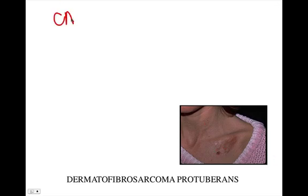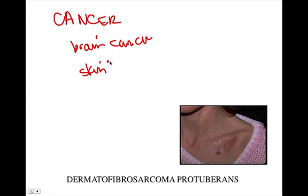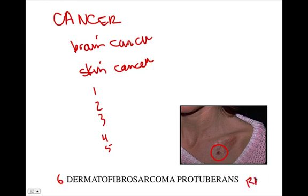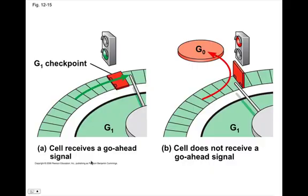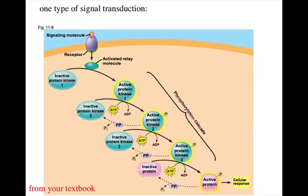Here we'll talk briefly about a patient who has skin cancer. You can have brain cancer or skin cancer, and there are a variety of different types of skin cancer. This woman has a specific rare type called dermatofibrosarcoma protuberans. Scientists and doctors have been able to diagnose this specific type for years, and in the next lecture we'll go into why she has that specific type of skin cancer.